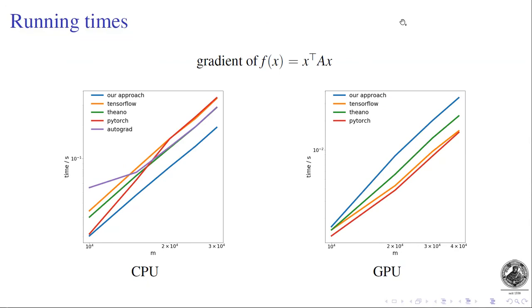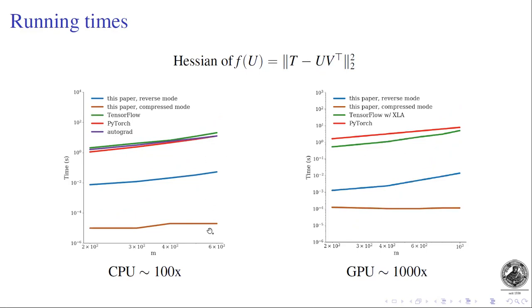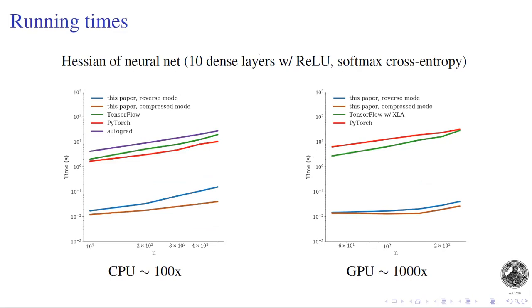On the speed side: if your function has scalar output, we're basically as fast as PyTorch, Theano, and TensorFlow on CPU and GPU. But when you look at the Hessian, you see a speedup of two or three orders of magnitude over Theano, PyTorch, or TensorFlow. The same holds for matrix factorization and for compressed Hessian derivatives. You can even compute the Hessian of a neural net — in this case 10 dense layers — and again you see two to three orders of speedup. This really shows that PyTorch and TensorFlow cannot compute it properly.